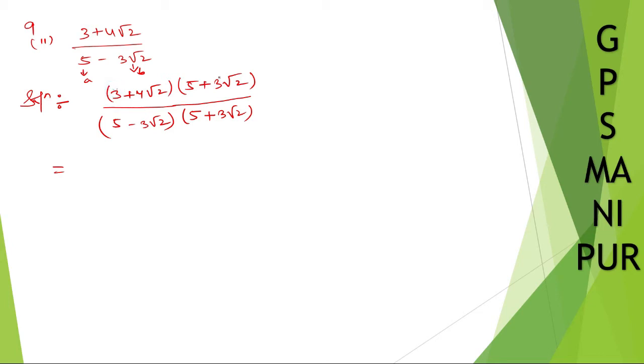Now multiply 3 to both these numbers. So 3 times 15 plus 3 times 9 root 2. Done with 3. Now take 4 root 2 and multiply to both these numbers. Here it will be 4 into, 4 root 2 into 5, 5 times 4 is 20 root 2, plus 4 times 3 is 12. Root 2 into root 2 will be 2.